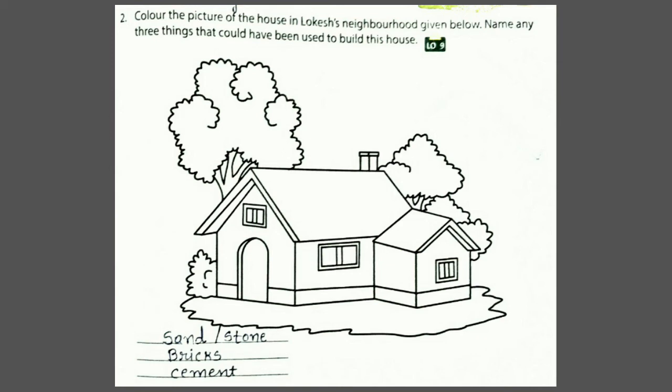Second activity: color the picture of a house in Lokesh's neighborhood and name any three things that could have been used to build this house. यह house पका house है, तो पका house बनाने में हम लिखेंगे: sand, bricks, cement and also stone.